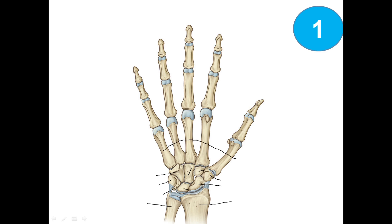Then we have the five metacarpals, starting from the thumb side: first, second, third, fourth, and fifth metacarpal. In the thumb we have two phalanges — proximal and distal — and for the rest of the fingers we have three: proximal, middle, and distal.